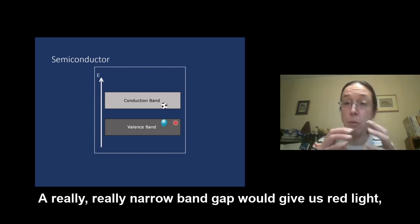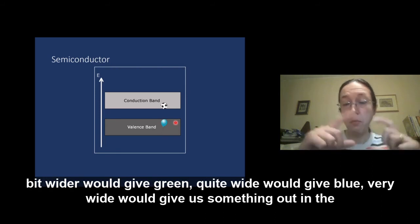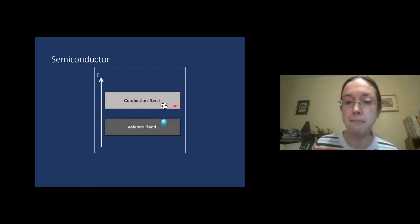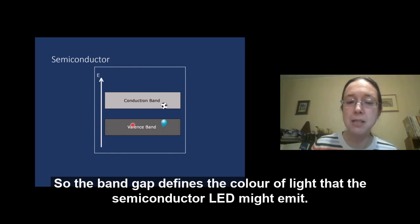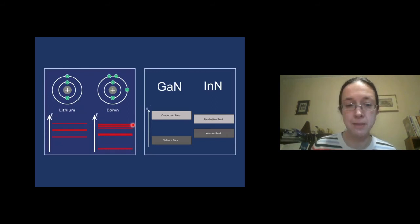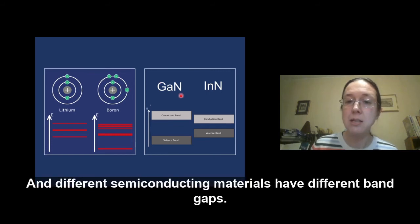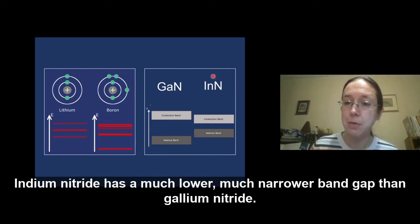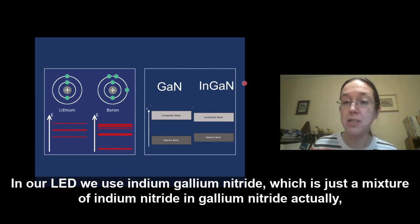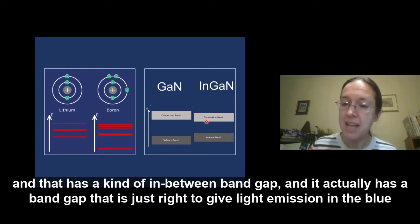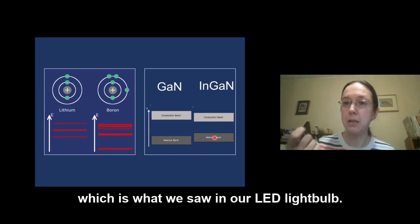So the band gap defines the colour of light that the semiconductor LED might emit. Now, different materials, different elements, we said, have different energy levels and different semiconductor materials have different band gaps. Indium nitride has a much lower, much narrower band gap than gallium nitride. And in our LED, we use indium gallium nitride, which is just a mixture of indium nitride and gallium nitride, actually. And that has an in-between band gap. And it actually has a band gap that's just right to give light emission in the blue, which is what we saw in our LED light bulb.